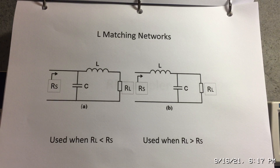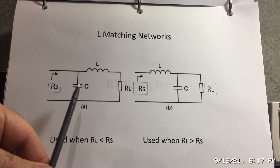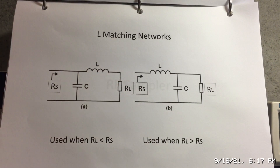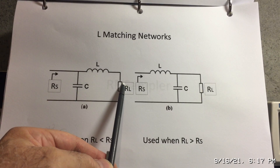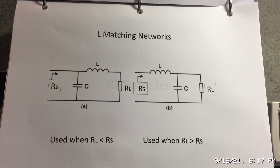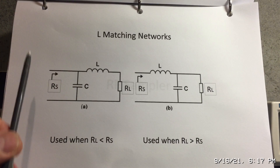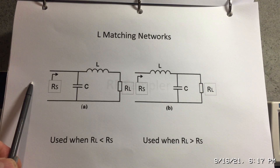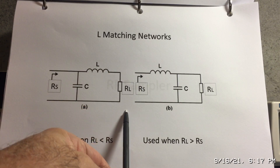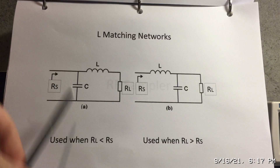Here are the two L networks I'd like to talk about. In one case, we have the shunt capacitor on the source side, and in another case we have the shunt capacitor on the load side. We use this configuration when the load resistance is less than the source resistance. In our case, we're going to be looking at this example — 50 ohms from our nano VNA as our source — and we're going to show a match to a 50 ohm load, and then later in the video show how we can match to a 25 ohm load using this L network.